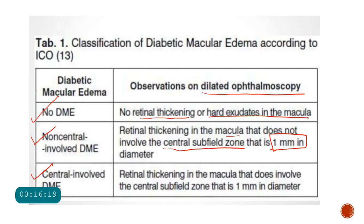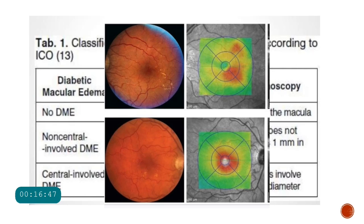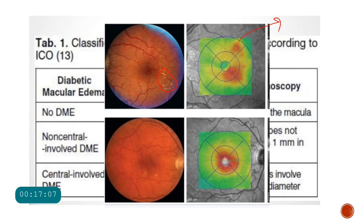If the central subfield zone (approximately 1 mm diameter in the ETDRS circle) is not involved, it is non-center involving diabetic macular edema — less severe. If the central subfield zone is involved, it is center involving diabetic macular edema — more dangerous. As shown in the images: the first picture shows thickening not involving the central circle (non-center involving), while the second shows thickening involving the central 1 mm zone (center involving).